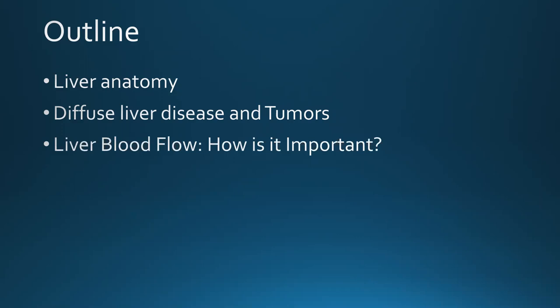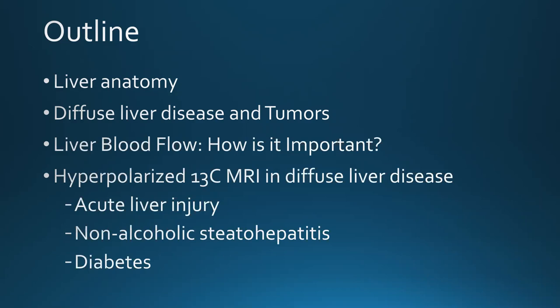I want to spend a little bit of time talking about blood flow in the liver, because one of the things that makes the liver unique is its blood supply — it's supplied differently than most other organs. That has important physiologic, metabolic, and imaging consequences. Then I'm going to focus a bit more on different probes and approaches we use for diffuse liver disease, giving you an idea of the unmet challenges and why liver is more or less challenging than other organs.